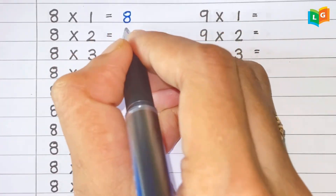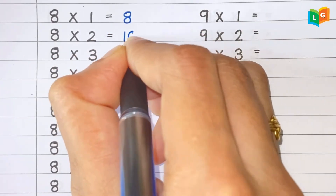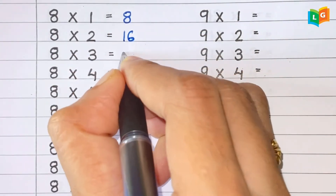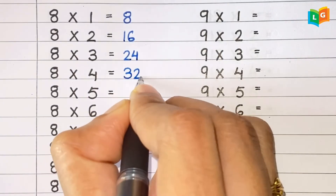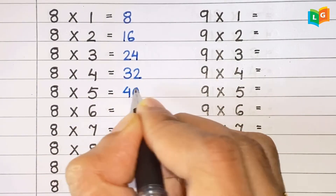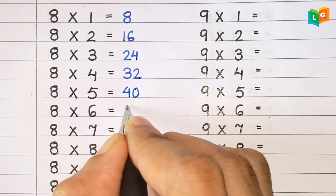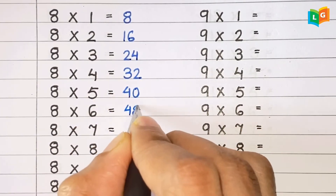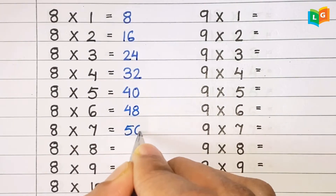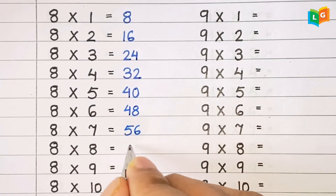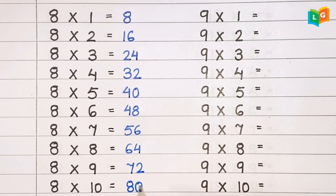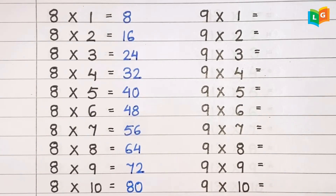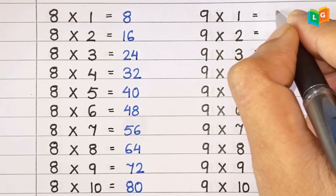Now let's see table of 8. 8 1s are 8, 8 2s are 16, 8 3s are 24, 8 4s are 32, 8 5s are 40, 8 6s are 48, 8 7s are 56, 8 8s are 64, 8 9s are 72 and 8 10s are 80.